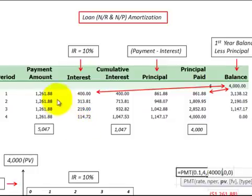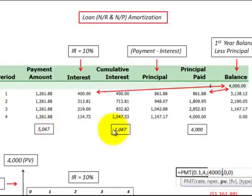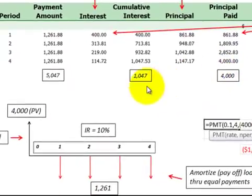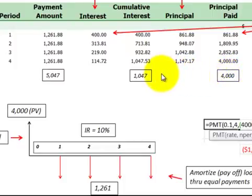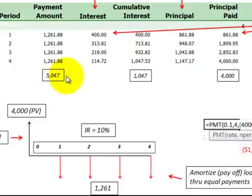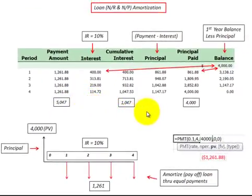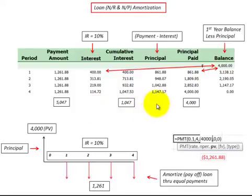Looking back at what we did: we paid total payments of $5,047, with cumulative interest of $1,047. Subtracting the $1,047 from $5,047 gives us the principal paid of $4,000 — matching our original loan. So we started with a $4,000 loan, and after paying it down we had cumulative interest — either payable or receivable — of $1,047 on total payments of $5,047. That's how we amortize the payments on a loan or notes receivable or notes payable, and how we charge the interest and principal.